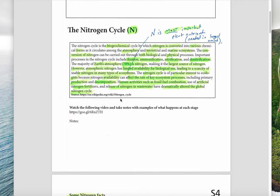First of all, let's have a look at nitrogen. Nitrogen is the main nutrient needed by plants. Of the macro or large nutrients needed in large amounts, nitrogen is required in the largest amount, then phosphorus and potassium — which is NPK. The nitrogen cycle is a biogeochemical cycle by which nitrogen is converted into various chemical forms as it circulates amongst the atmosphere, terrestrial and marine ecosystems. Conversion of nitrogen can be carried out through both biological and physical processes. Important processes include fixation, ammonification, nitrification, and denitrification.